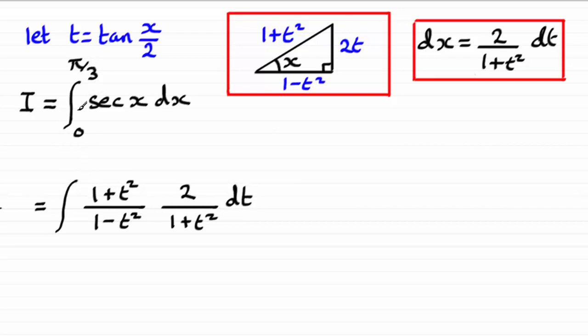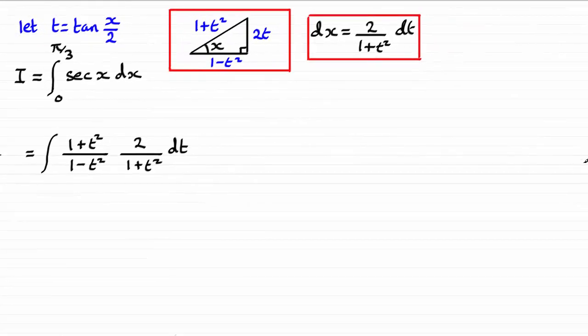Now, with this example, we've got limits. And we need to change these limits, which are with respect to x, to limits that are with respect to t. And to do that, we should be familiar with this idea. We just need to take our substitution here, t equals tan x upon 2.